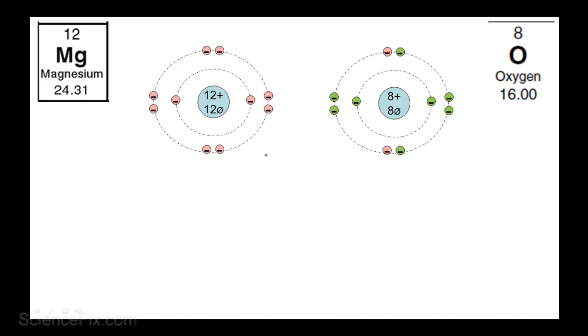But as a result of losing and gaining electrons, the charge of these atoms has changed. So let's take a look at magnesium. Magnesium's overall charge is 2+, because it has 2 more positive protons than negative electrons, because it gave up 2 negative electrons.